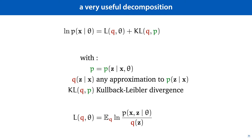This means that when q is a perfect approximation and the KL divergence becomes 0, L is equal to the likelihood. And the worse the approximation, the lower L is, since the KL divergence is always 0 or greater. In our current case, z is just a scalar, but we'll treat it as a bold-face vector to highlight that in general, this decomposition holds for any kind of latent variable. We will need that when we reuse this decomposition in later lectures.